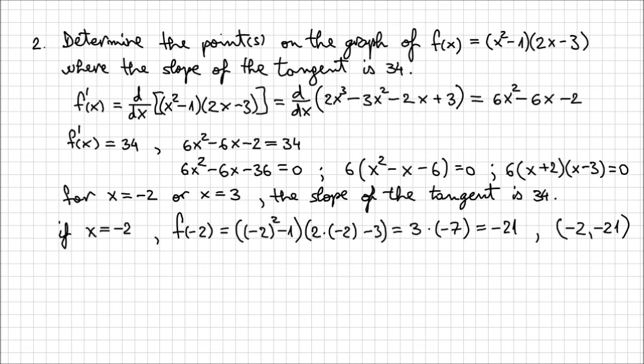And the second point we found, if x = 3, then we calculate f(3) to be (3² - 1)(2(3) - 3), which is going to be 8 times 3, which is 24. So the second point is (3, 24).